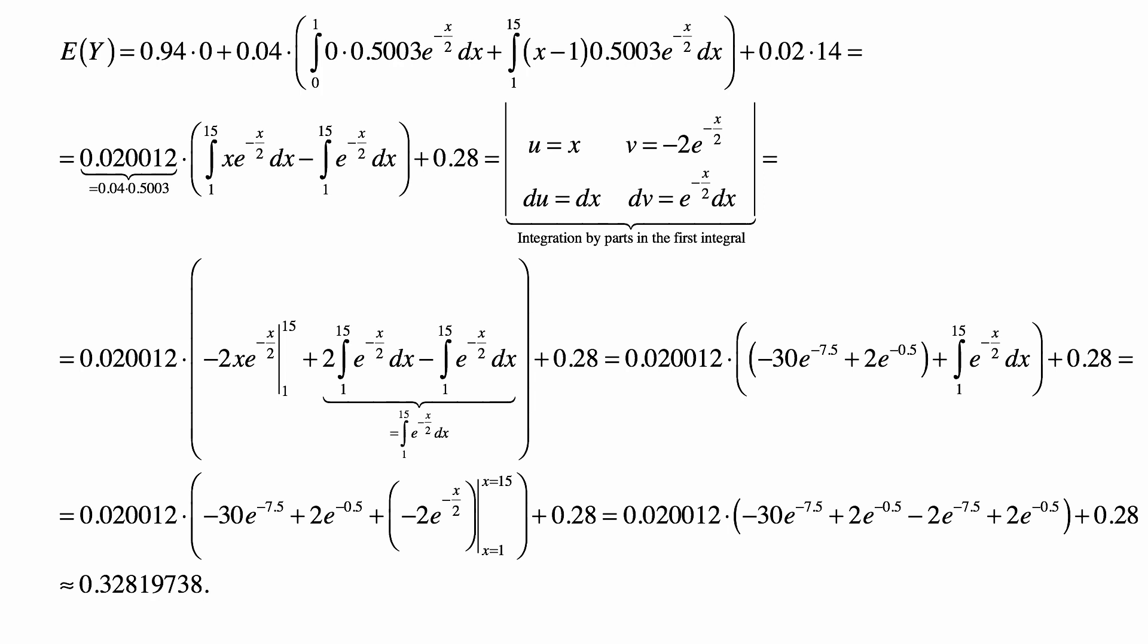the integral from 0 to 1 of 0, which is the payment if the claim is under the deductible of 1, times the probability density function in this case, plus the integral from 1 to 15 of X minus 1 times the density of 0.5003 times e to the minus X over 2 dX, plus 0.02 times 14, which is the amount paid if the loss is total.